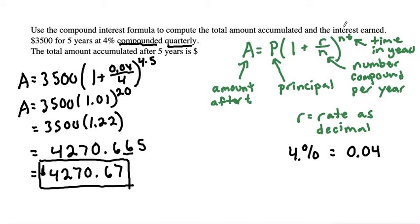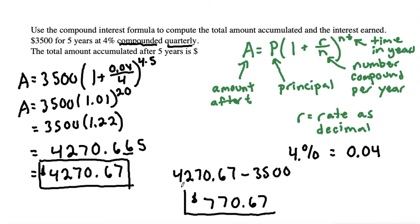The other thing the problem asks is the interest earned. The interest earned is the total amount minus the principal. So $4,270.67 minus $3,500 equals $770.67, which is the total interest earned.